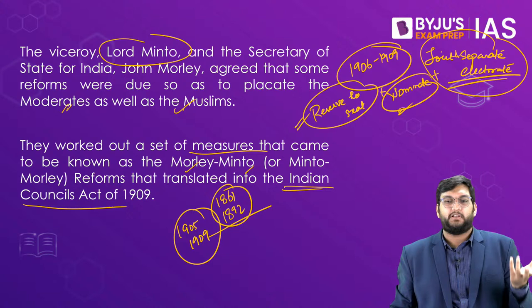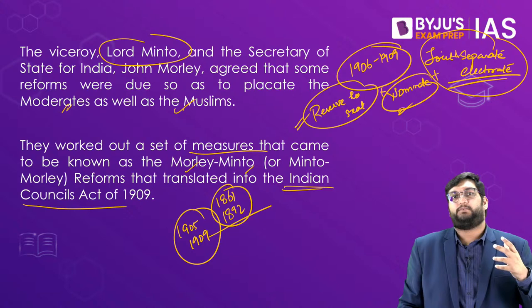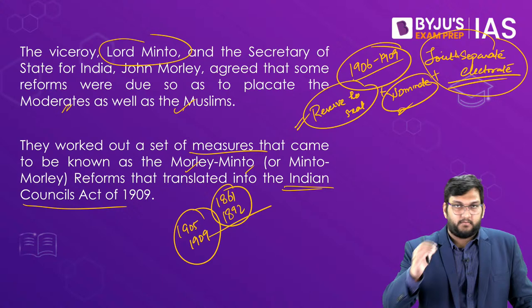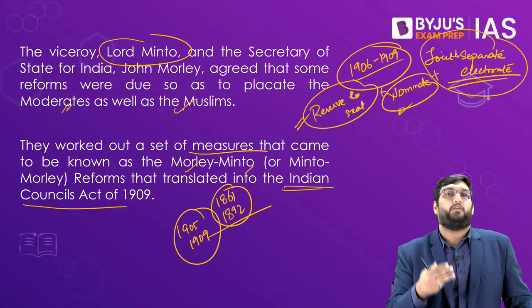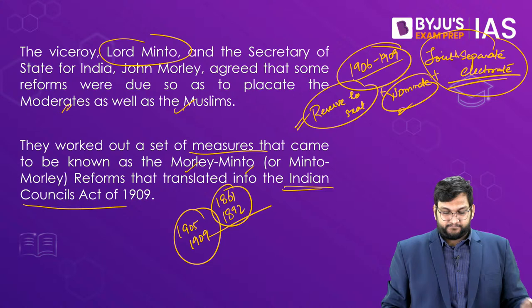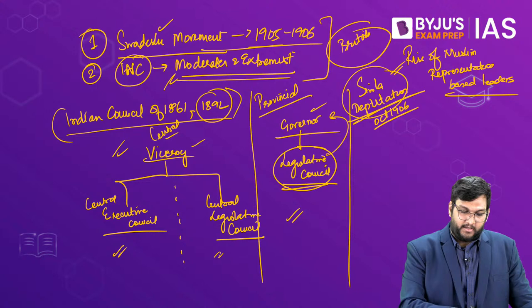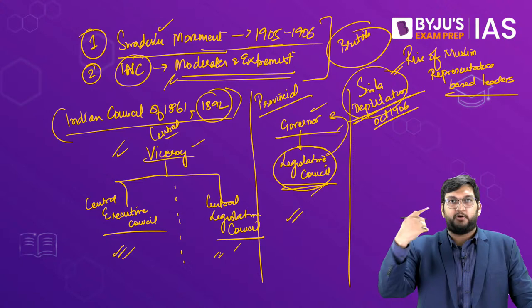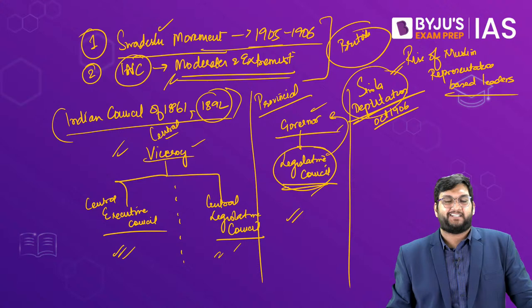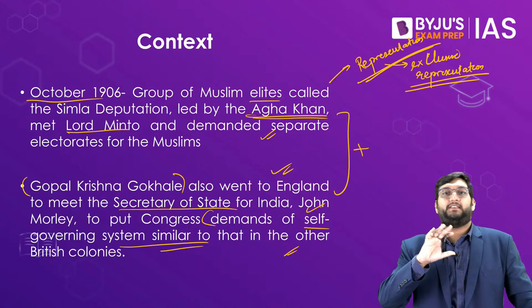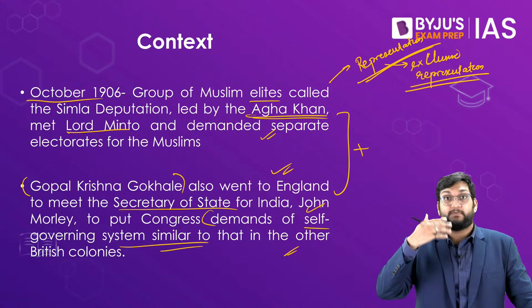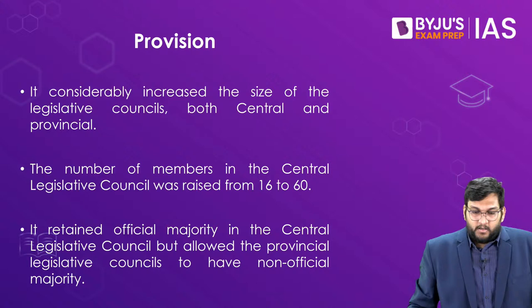A lot of students study Morley-Minto or even the Indian Council Acts in isolation, but each of them has a context, and that context is very important. The measures from this deliberation are called the Morley-Minto reforms, which translated into the Indian Council Act of 1909 — they are the same thing. Remember, some form of indirect election was already introduced by 1892, but by 1909 proper elections with limited franchise were being considered.